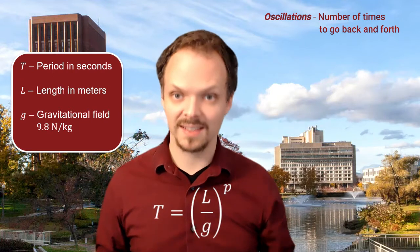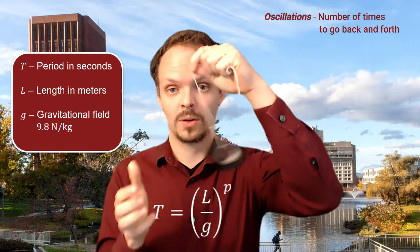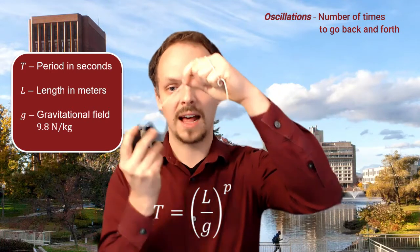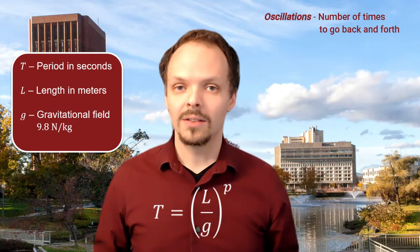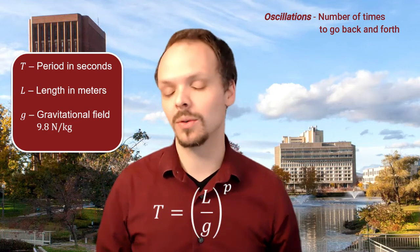So what makes more sense is to do several oscillations, say 5: 1, 2, 3, 4, 5. Time how long that takes and then divide by 5, and that'll give you a period. You'll have to determine how many oscillations to use, and we'll guide you through how to make that decision.